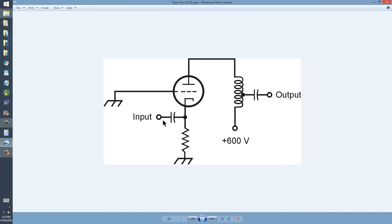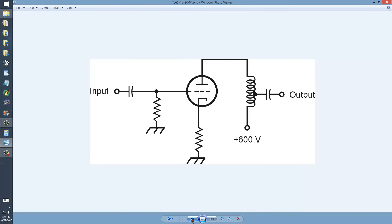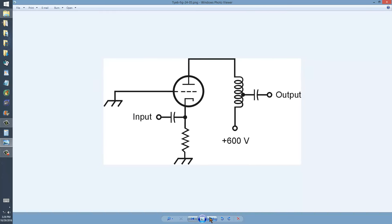Otherwise, the functions of the components are the same in this figure 24-5. They're the same in the circuit shown here as they are in the circuit shown in figure 24-4. But there's one less resistor. This resistor right here elevates the cathode above ground for direct current, providing the proper bias between the control grid and the cathode.